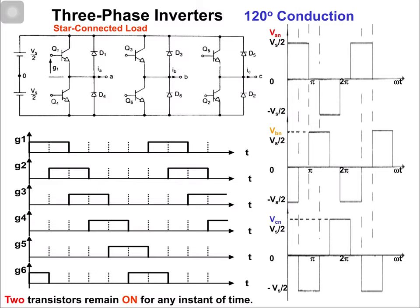At any instant of time, switch 1 and 6 are on, then 1 and 2, then 2 and 3, then 3 and 4, then 4 and 5, then 5 and 6, and then the switching states repeat. For one cycle I have marked the switching states, and in each interval — which is 60 degrees — two switches are on at any instant.